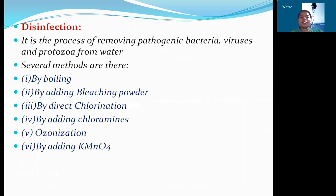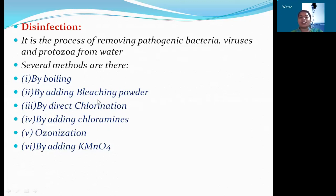Next, disinfection. What is disinfection? It is a process of removing all the pathogenic bacteria, viruses, and protozoa from water. After doing all these methods, the water still contains some microorganisms, and these microorganisms we can remove in this process. It is done by using different methods: by boiling, by adding bleaching powder, by direct chlorination, by adding chloramines, ozonization, and by adding KMnO4. By using these, we remove all the microorganisms from the water. This process we call the disinfection process.